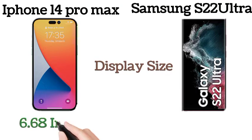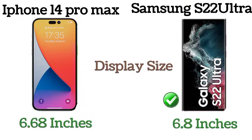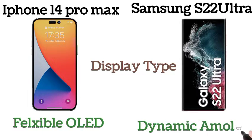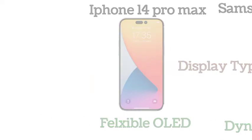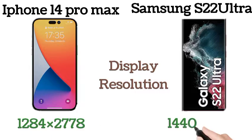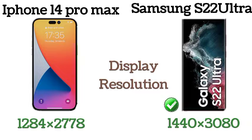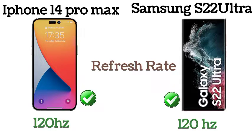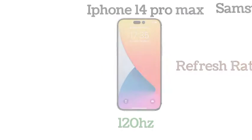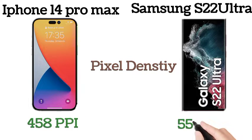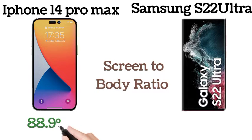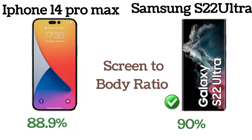First of all, we compare the display of both phones. The display size of the iPhone 14 Pro Max is 6.6 inches and the S22 Ultra is 6.8 inches. The iPhone 14 Pro Max has a flexible OLED display and the S22 Ultra has a dynamic AMOLED display. The display refresh rate of both phones is 120Hz. The iPhone 14 Pro Max has 458ppi and the Samsung S22 Ultra has 550ppi. The screen-to-body ratio is 88.9% and 90% respectively.